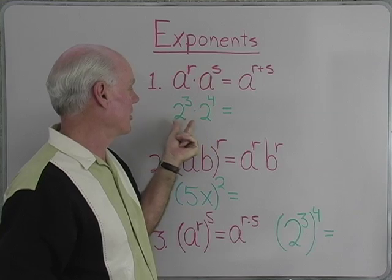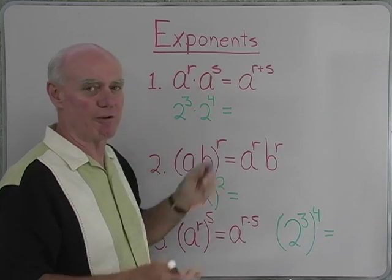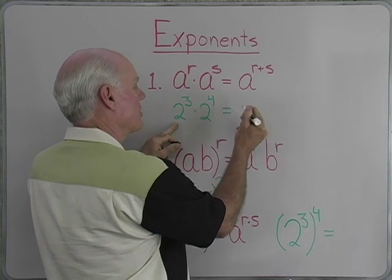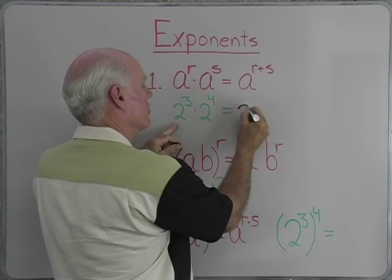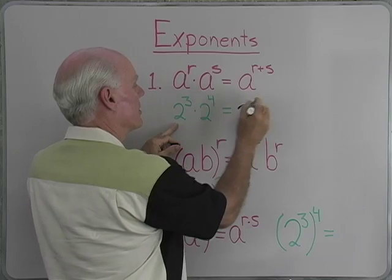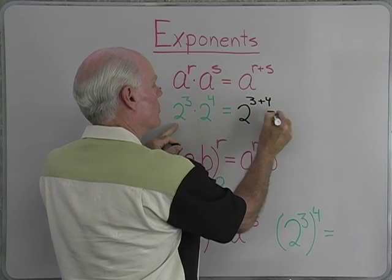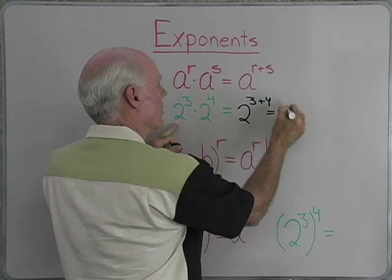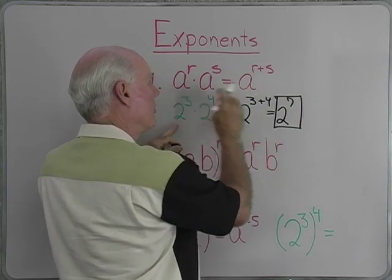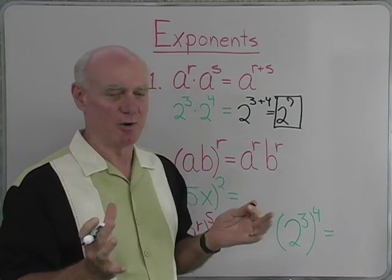So if I have an expression like this — 2 to the 3rd times 2 to the 4th — I see the bases are the same, so that's going to simplify to 2 to the sum of these powers, 3 plus 4, which will be 2 to the 7th power. So when I multiply with the same base, I add exponents.